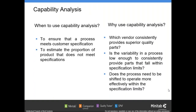When do we use capability analysis? We use it to ensure that the process meets customer specifications, to estimate the proportion of product that does not meet specification, and to choose which vendor consistently provides superior quality parts — determining whether the variability in the process is low enough so our system provides parts that fall within the specification limits and whether the process needs to be shifted to operate more effectively.